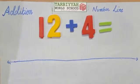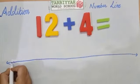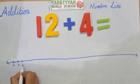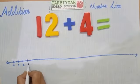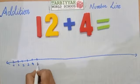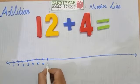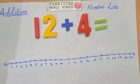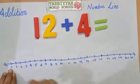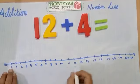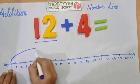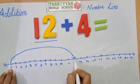First, we have to draw a number line. Then we have to mark the numbers: 0, 1, 2, 3, 4, 5, 6, 7, 8 — like this. So, what we have to do? We have to start from 0 to 12. What is the first number? 12. So we have to mark from 0 to 12, like this.